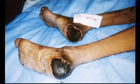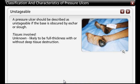A pressure ulcer should be described as unstageable if the base is obscured by eschar or slough. Until enough slough and/or eschar is removed to expose the base of the wound, neither the true depth nor the stage can be determined.